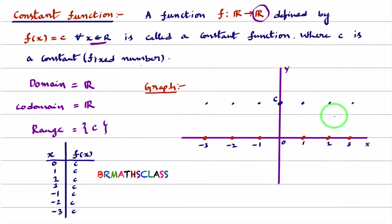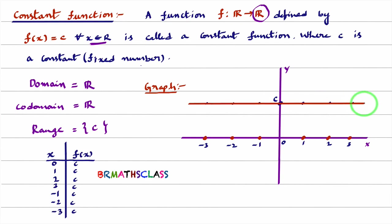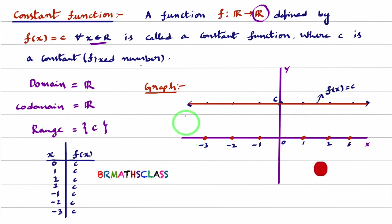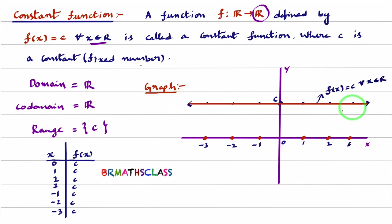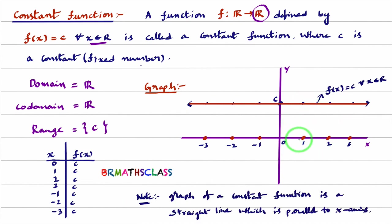When you join all these points, you get a straight line which is parallel to the x-axis. Therefore, the graph of a constant function is a straight line which is parallel to the x-axis.